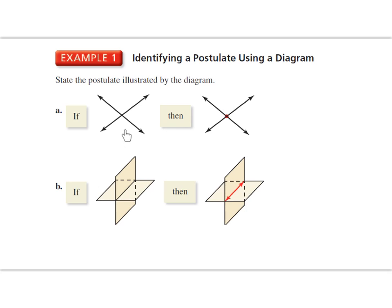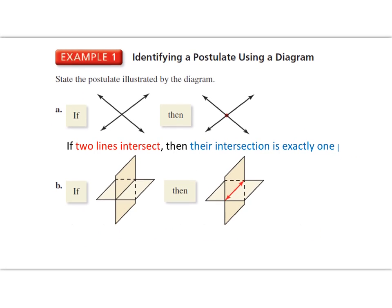So all I see are two lines intersecting, so that's exactly what I say in words. If two lines intersect, then next I see that there's a point of intersection, so I would say the intersection is exactly one point.